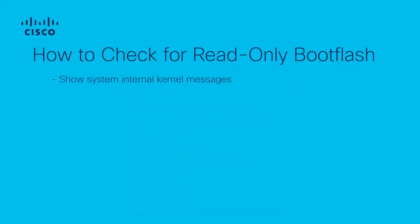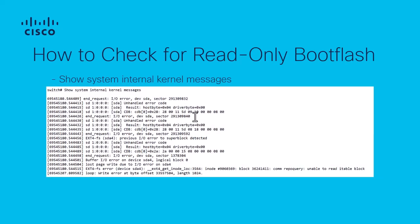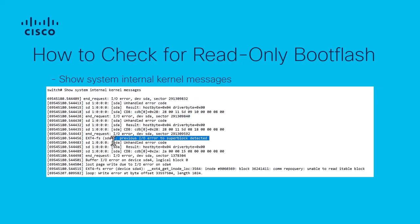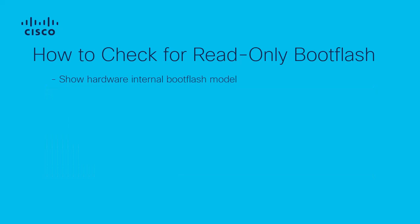Next, we can look at the command show system internal kernel messages. This command is always very dense and loaded with information, so there is no need to parse through the entire output, especially if you have recorded all of the other previous logs. However, if you do choose to parse through this log, you may look for error messages that include 'buffer I/O error' or 'ext4-fs error'. These go together with the output from show logging log and show logging nvram. Finally, we can take a look at the specific model of boot flash with the command show hardware internal boot flash model. Knowing the specific boot flash model is relevant for knowing to which specific Cisco defect the read-only boot flash is related.